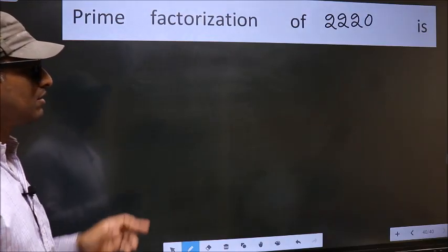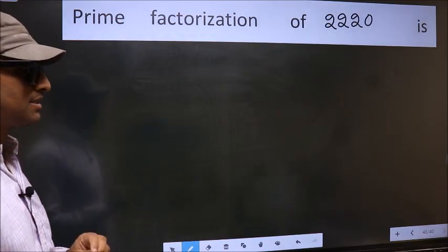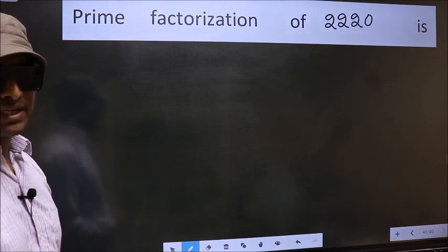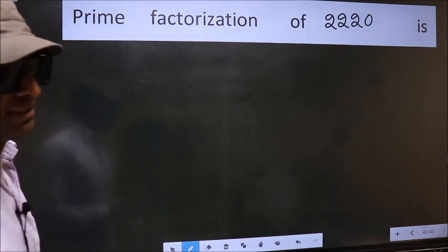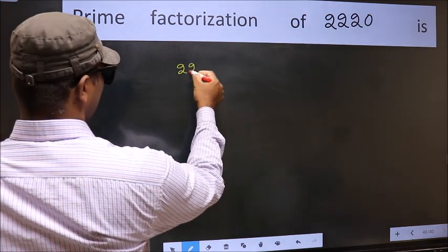Prime factorization of 2220. To do prime factorization, first we should frame it in this way: 2220.